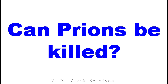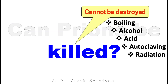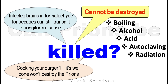Can prions be killed? In general, prions cannot be destroyed by boiling, alcohol, acid, standard autoclaving methods, or by radiation. Infected brains preserved in formaldehyde for decades can still transmit spongiform disease. Cooking a burger until it is well done won't destroy these prions.